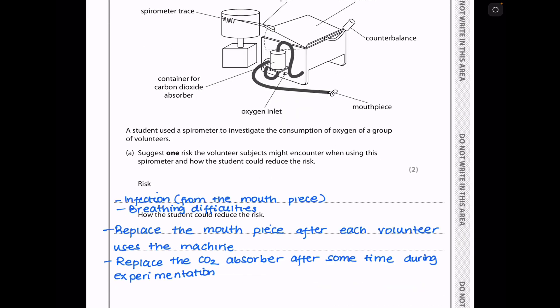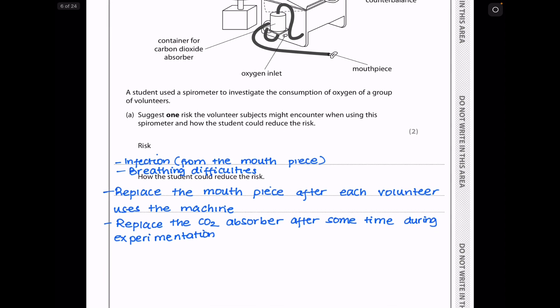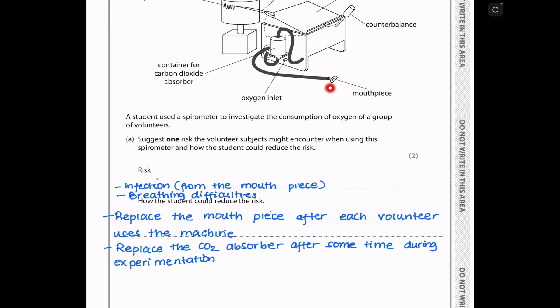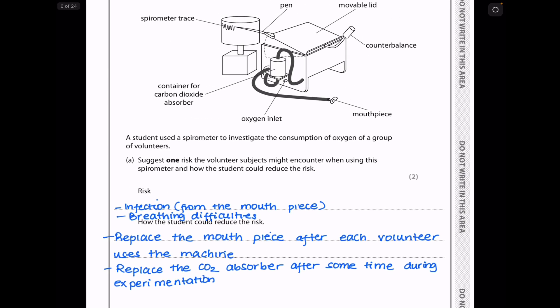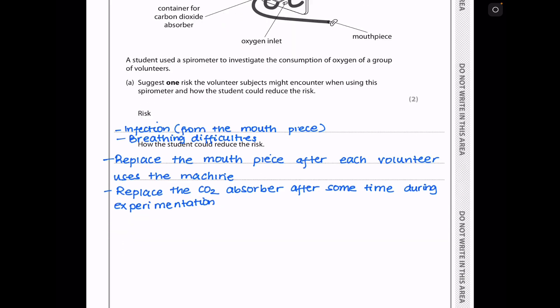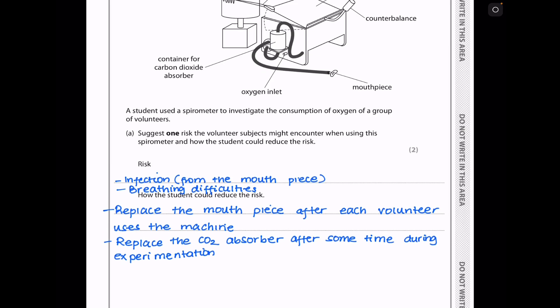A student used a spirometer to investigate the consumption of oxygen of a group of volunteers. Suggests one risk the volunteer subjects might encounter when using this spirometer and how the student could reduce the risk. The risk could be infection because they are all going to be placing this mouthpiece into their mouth. And others could have breathing difficulties depending on how much the absorber of carbon dioxide is efficiently removing the carbon dioxide from the air they have to breathe in. So I wrote infection from the mouthpiece as well as breathing difficulties. And then they asked how the students could reduce the risk. In this case, you could reduce the risk by replacing the mouthpieces after each volunteer uses the machine. And for the breathing difficulties, you could replace the carbon dioxide absorber after some time during the experimentation.